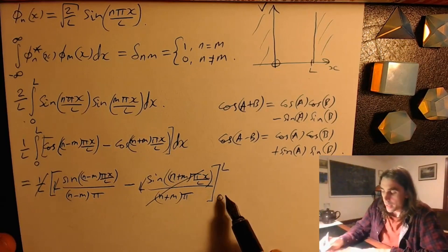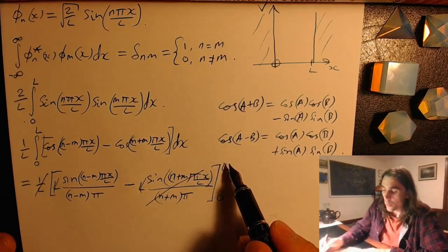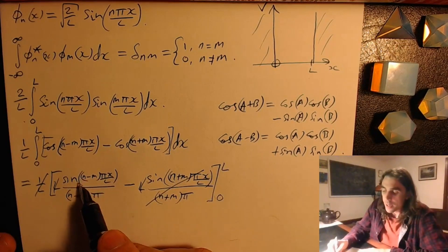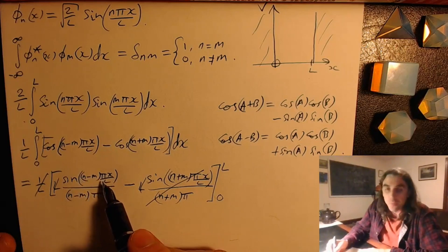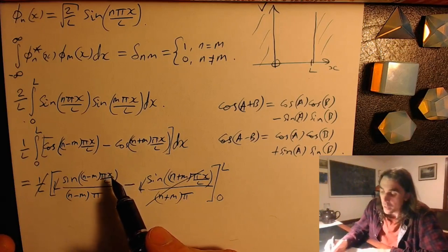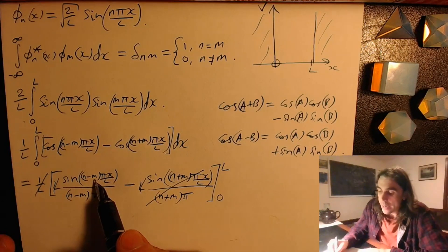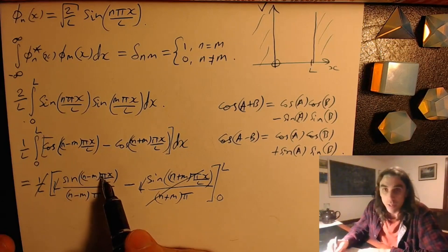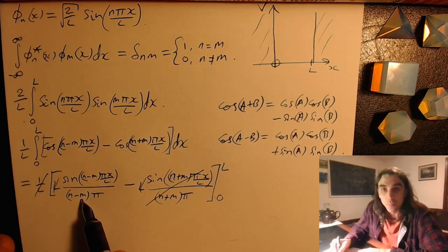This one also almost disappears, the zero limit disappears. When we put L in, so we have sine of n minus m times pi. Well, n minus m is also an integer, for integer n and m. The only problem is when n equals m, this is zero, sine of zero is zero, good. But n minus m is also zero on the bottom. And zero divided by zero is undefined.